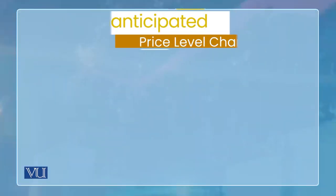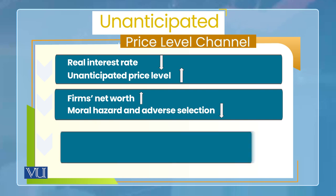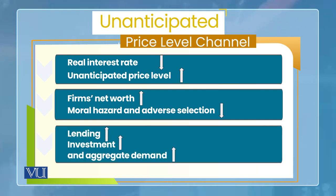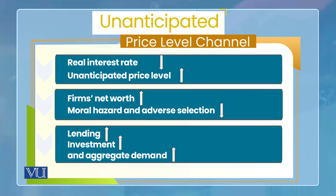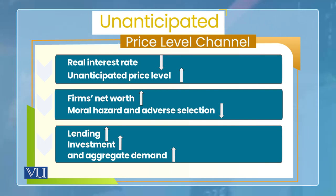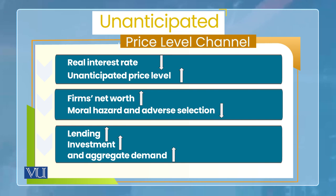چونکہ assets اگر unanticipated price change کے ساتھ adjust کر جائیں تو real value of assets پہ فرق نہیں پڑتا — نتیجہ یہ ہے کہ firms کی net worth increase ہو جاتی ہے۔ اب channel discuss کریں: monetary policy instrument change ہوا، nominal interest rate change ہوا، جس کی وجہ سے real interest rate کم ہوا — یعنی expansionary monetary policy۔ Real interest rate کم ہونے سے unanticipated price level increase ہو جاتا ہے کیونکہ demand increase ہو جاتی ہے۔